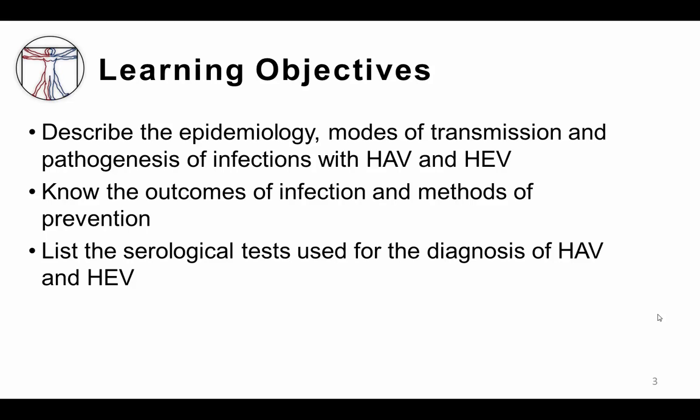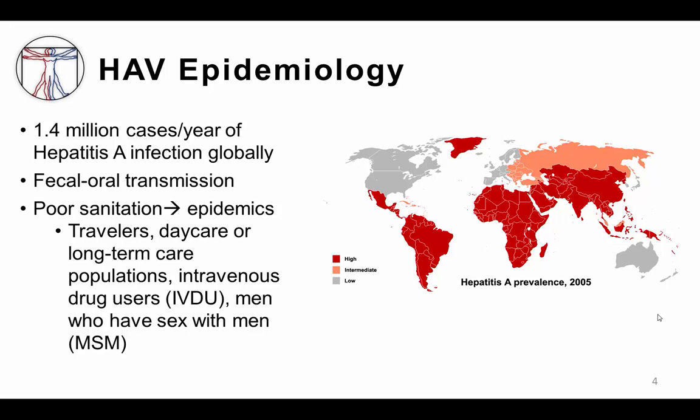There are an estimated one and a half million cases per year of hepatitis A globally. It is one of the most frequent causes of food-borne illness worldwide. The virus is transmitted through infected stool, and so the main risk factor for hepatitis A infection is poor sanitation, which can lead to cyclical epidemics. The virus is often associated with areas of the world that have poor public health infrastructure.